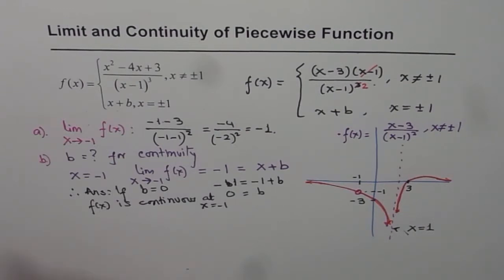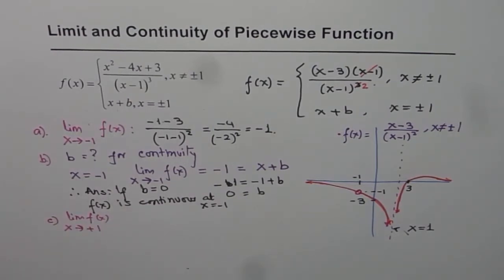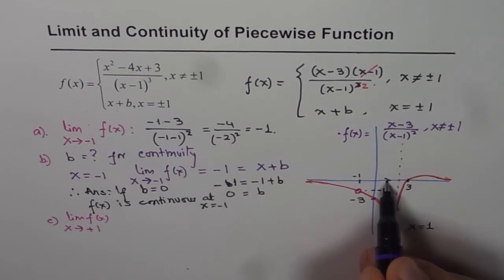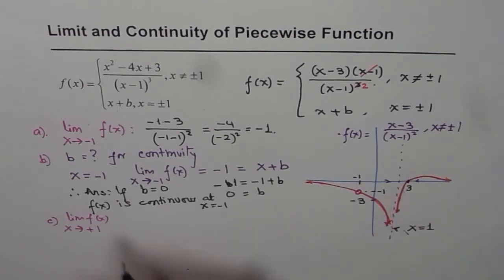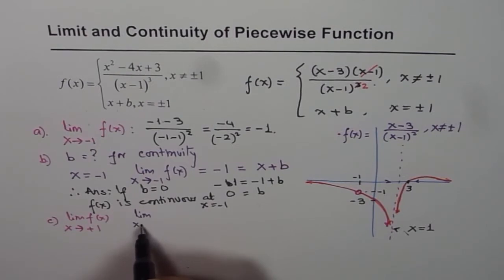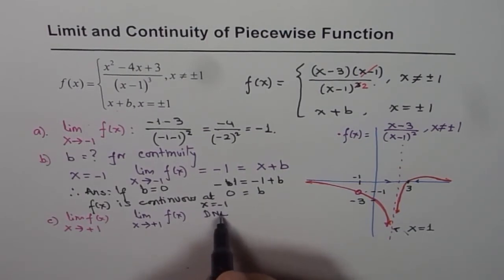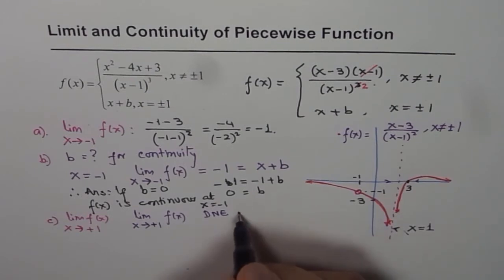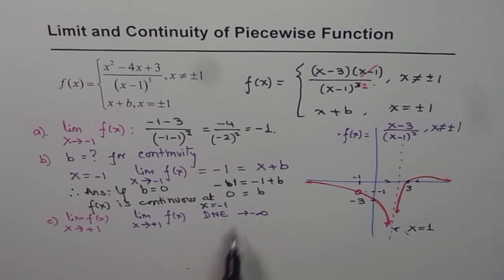The next part of the question: find the limit of f(x) as x approaches plus 1. As x approaches plus 1 from the left and right side, we notice that the function approaches negative infinity, which is not a defined value. So the limit of the function as x approaches plus 1 does not exist. Since it approaches minus infinity, the limit does not exist when the function approaches plus 1.